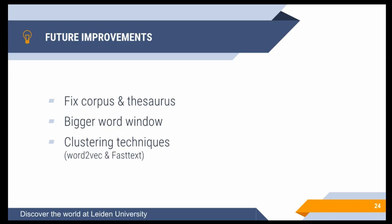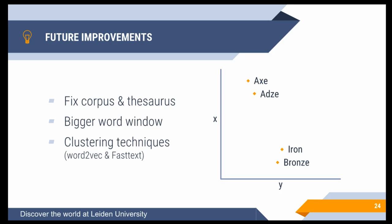Something I'm experimenting with is using clustering techniques — specifically word2vec and fastText, both unsupervised machine learning algorithms that place words in a high-dimensional vector space based on their context. If you project down to two dimensions it becomes quite intuitive: words are placed on a graph based on two variables and can be grouped using normal clustering techniques such as k-means. For example, group one might contain artifacts like axes, while group two contains materials like iron and bronze. Incorporating this group information as a feature should increase accuracy.